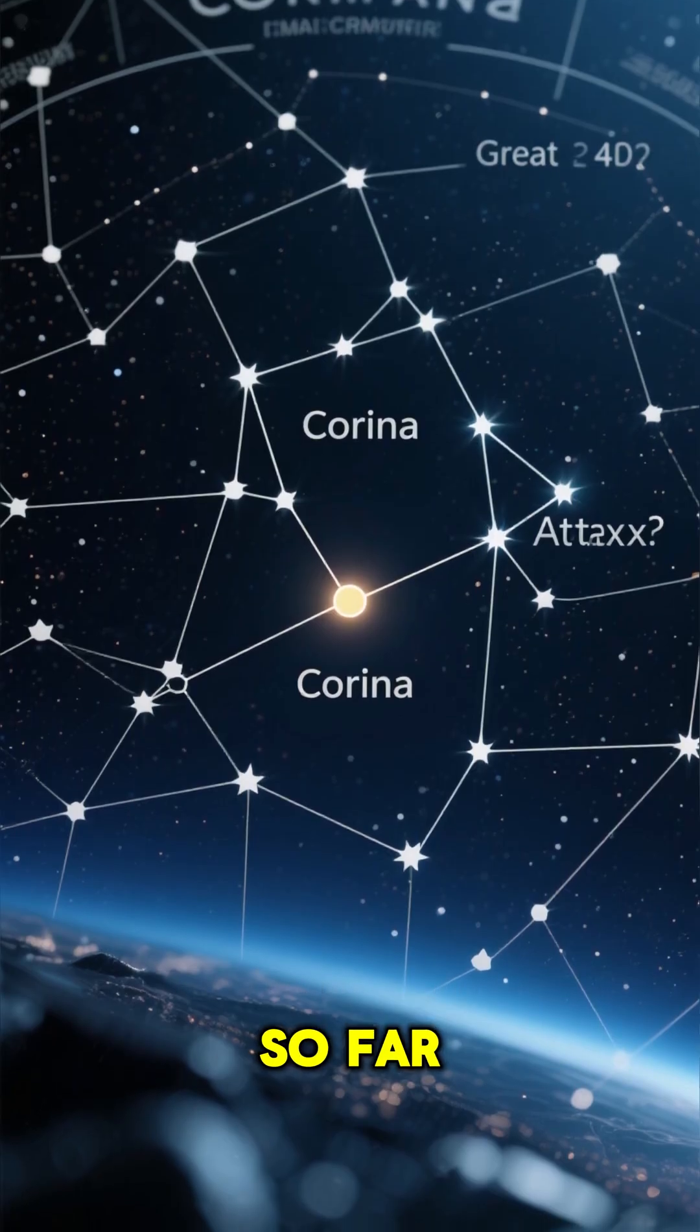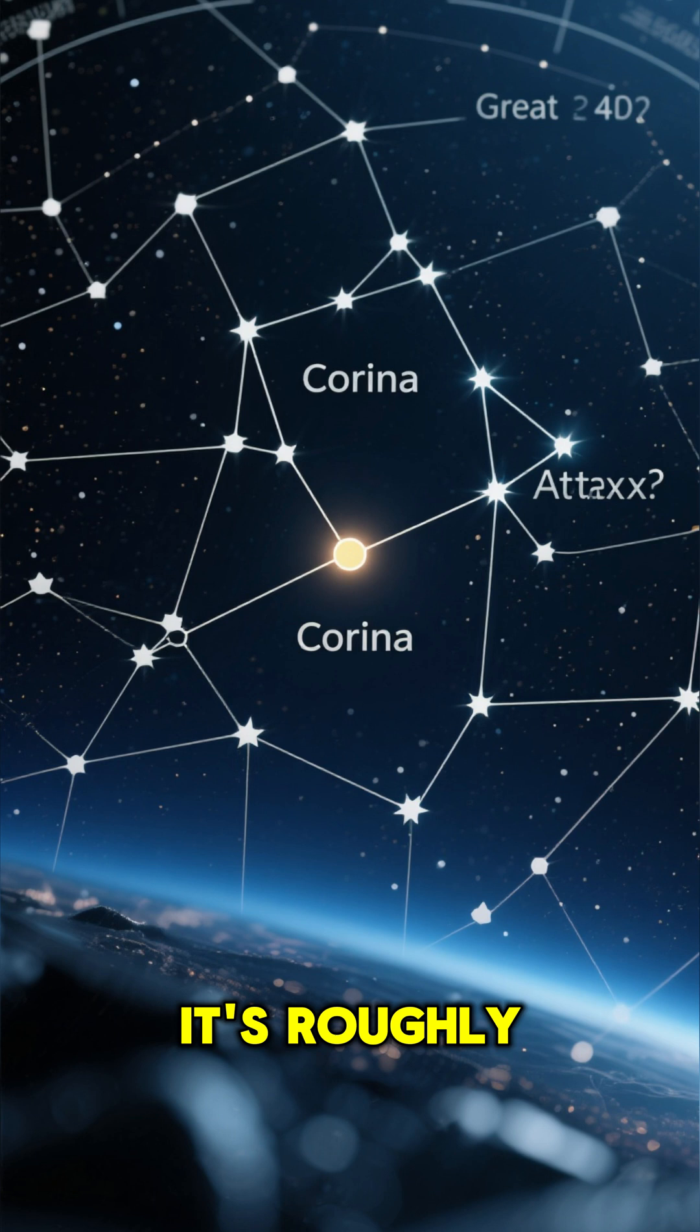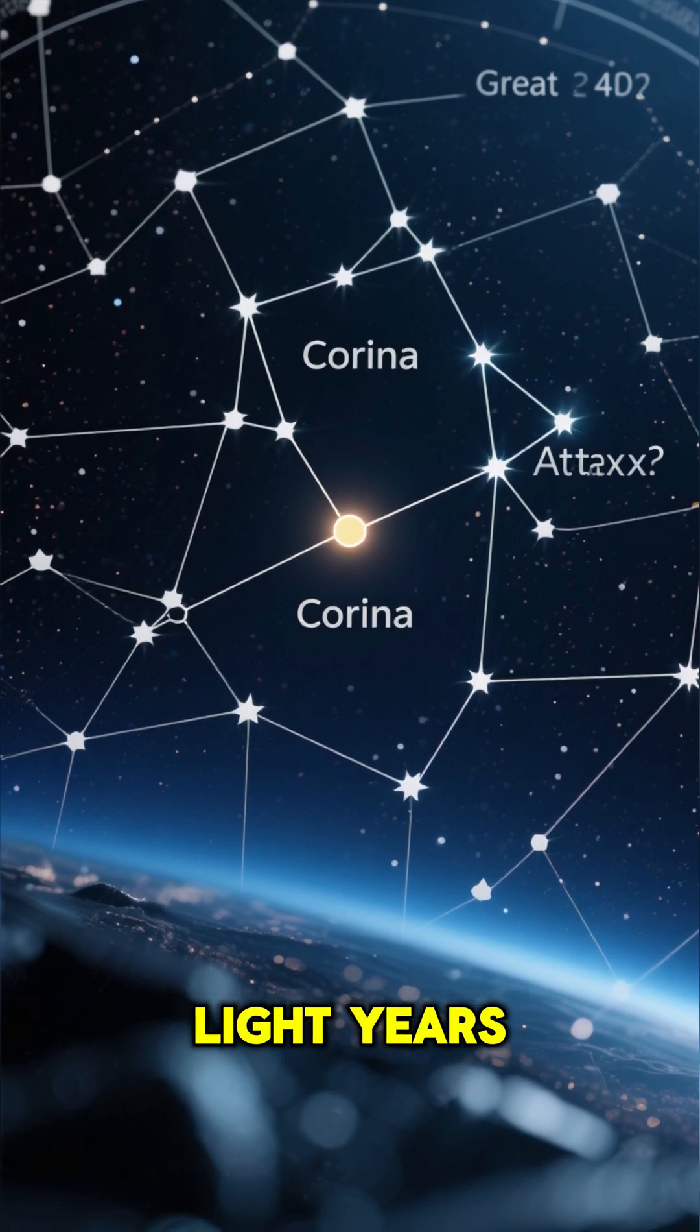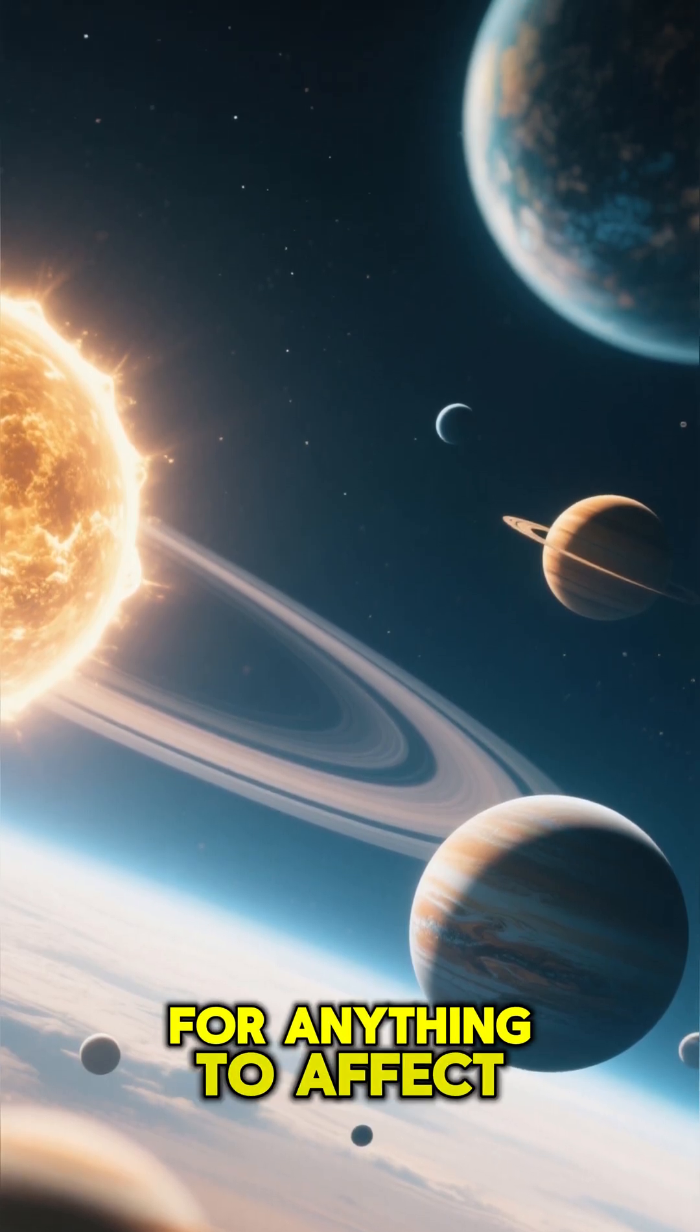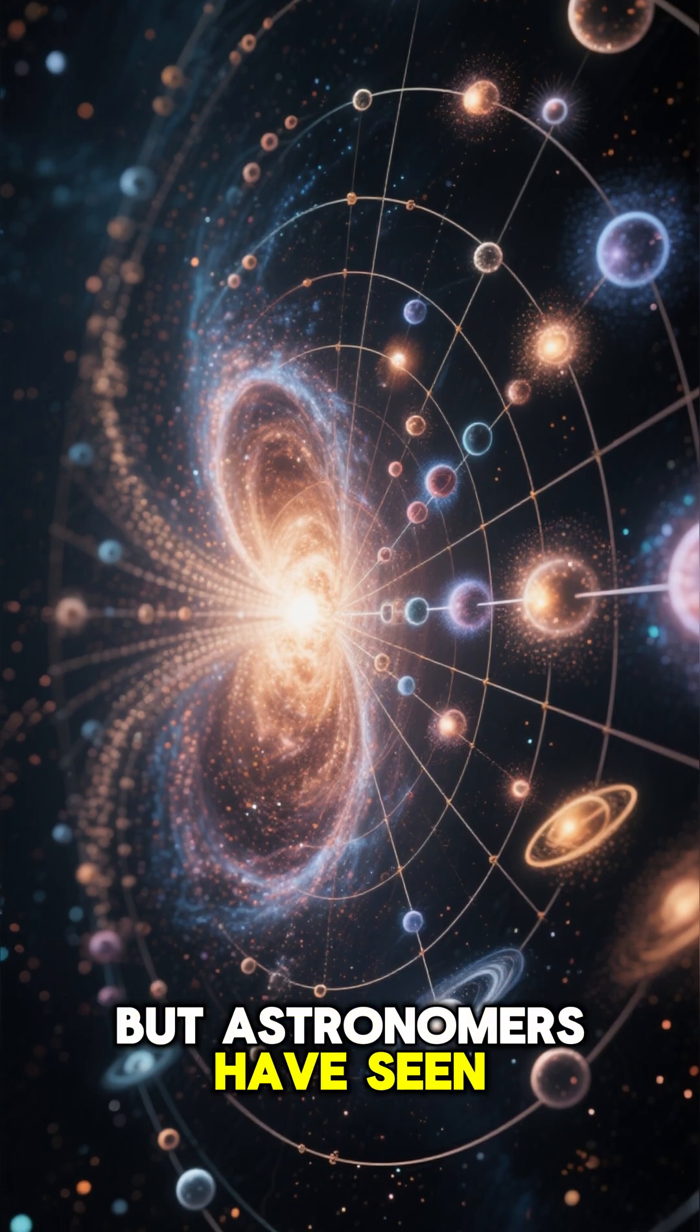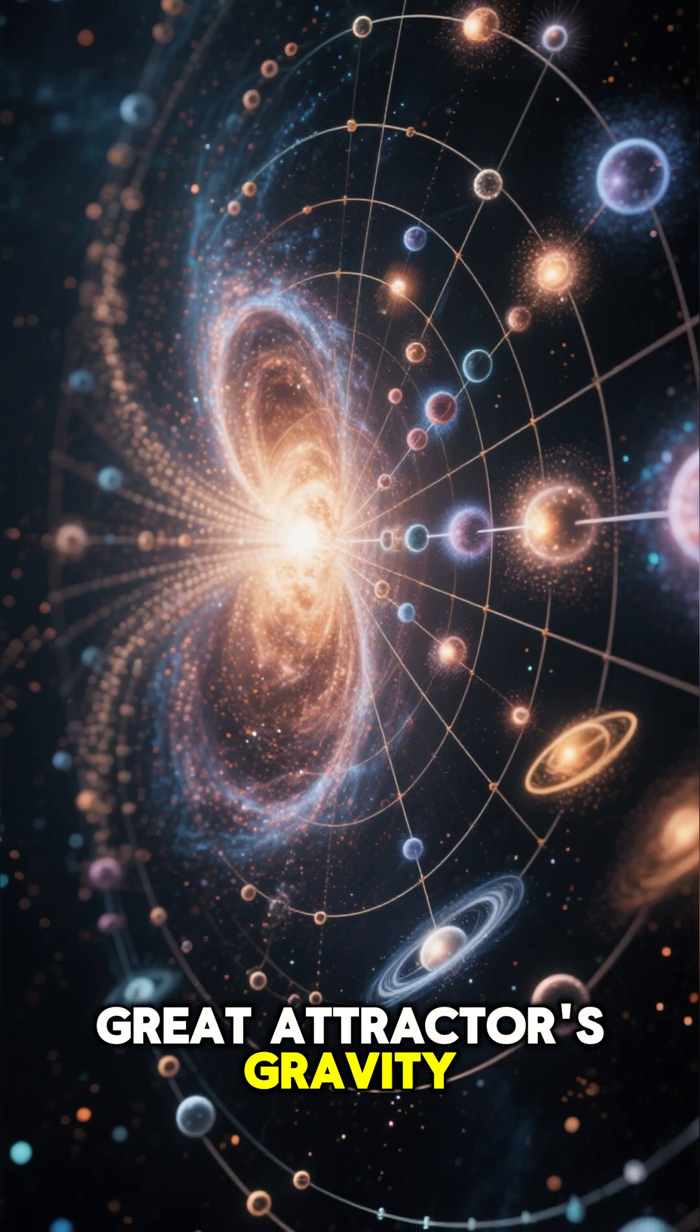Here's what we know so far. The great attractor is located in the constellation Carina. It's roughly 290 million light years away from us. At that distance, it should be impossible for anything to affect our solar system.